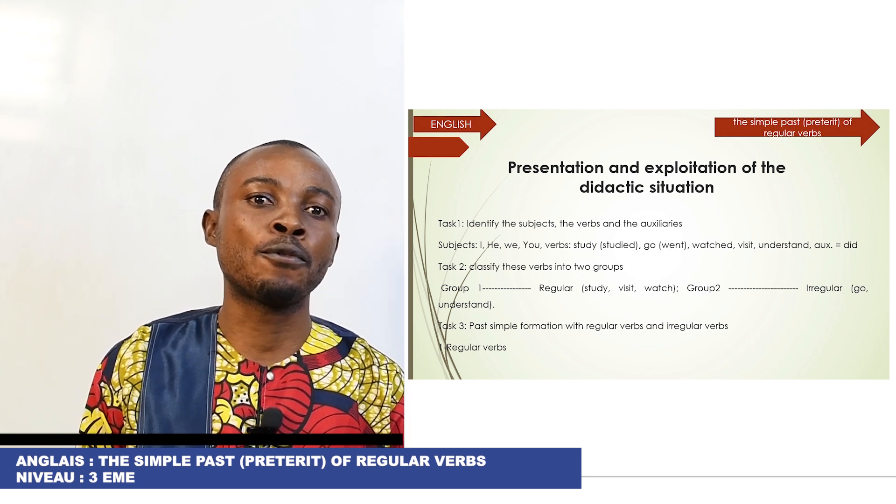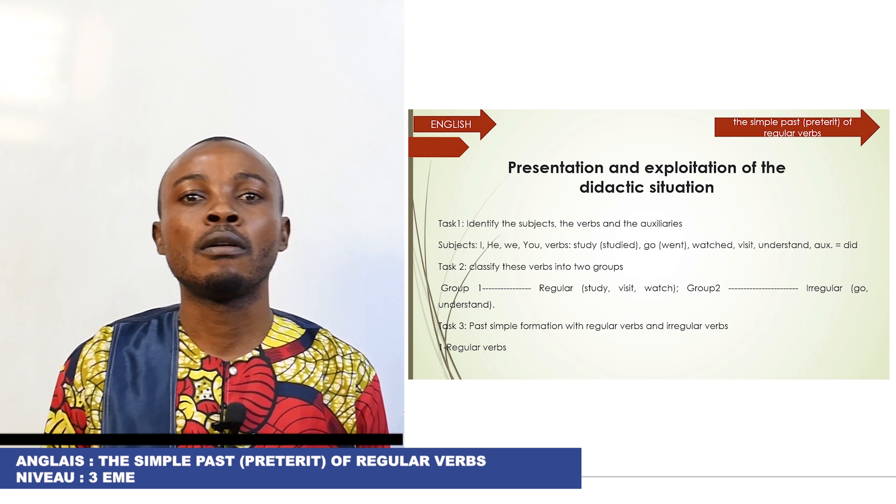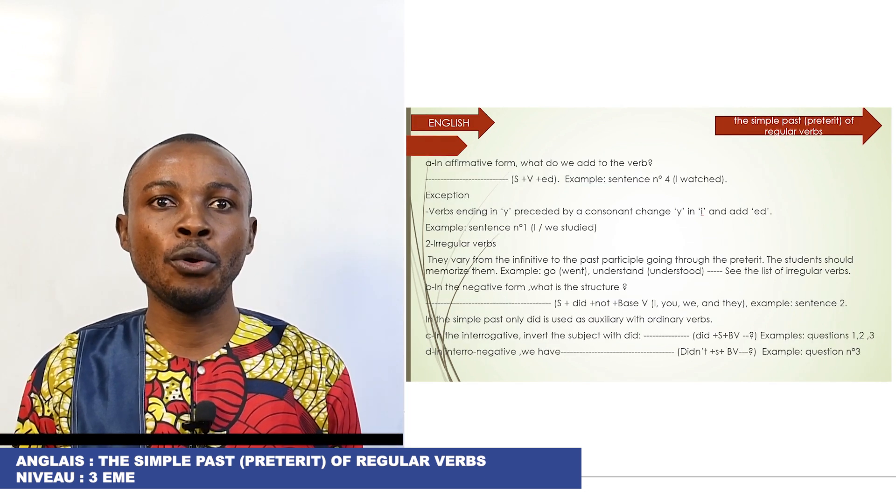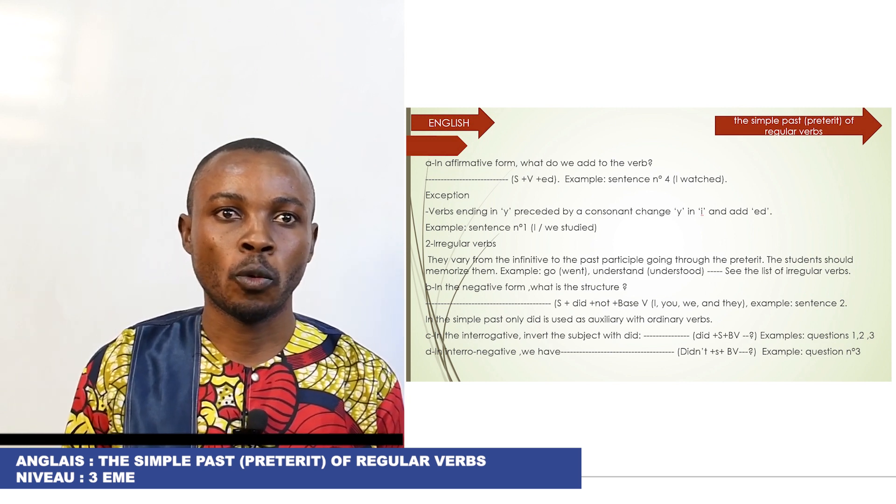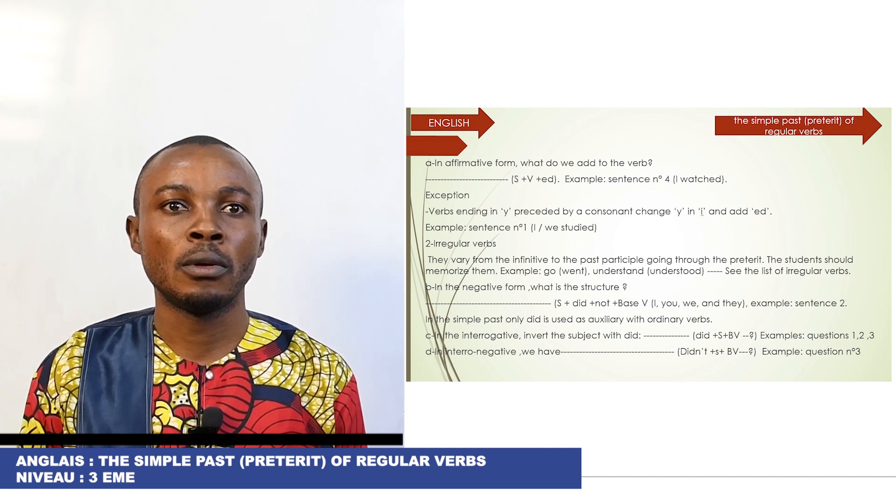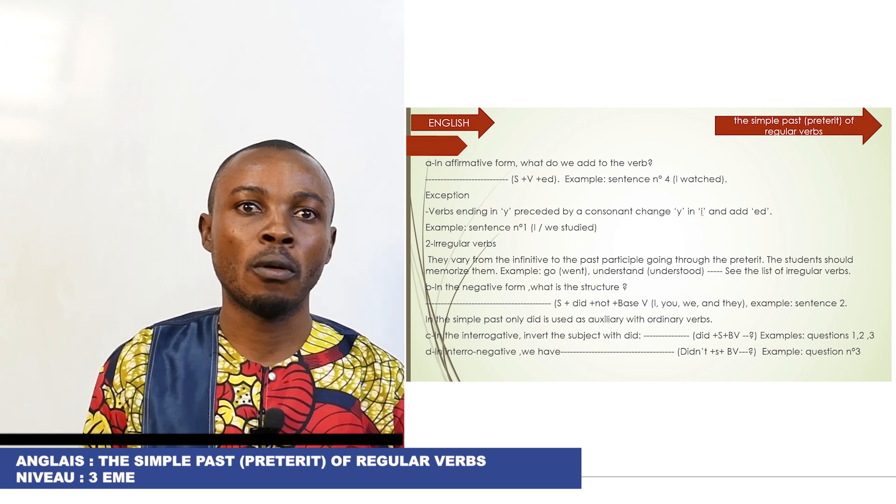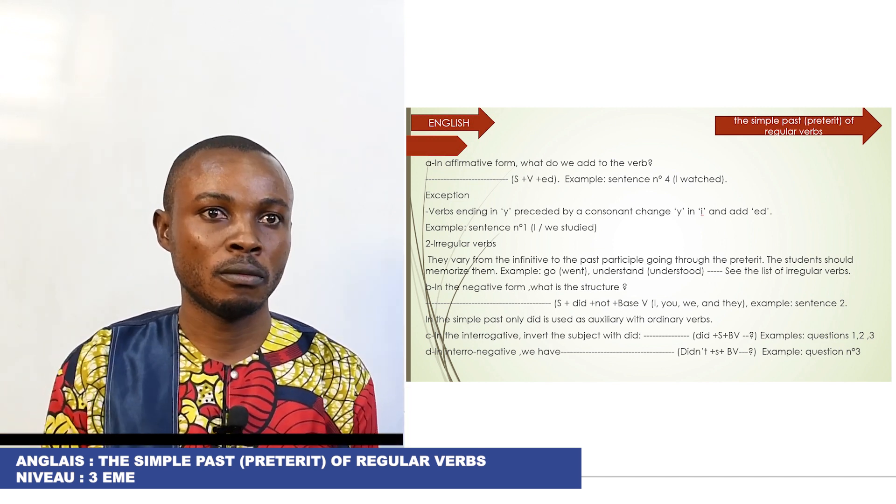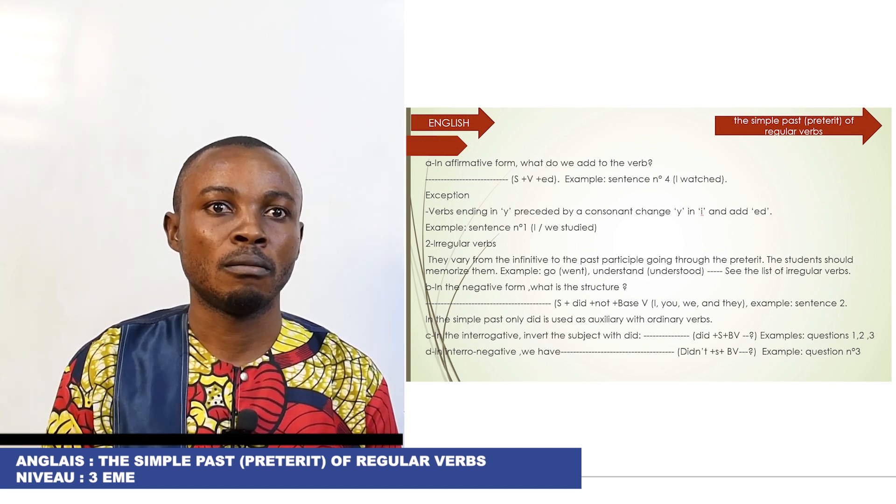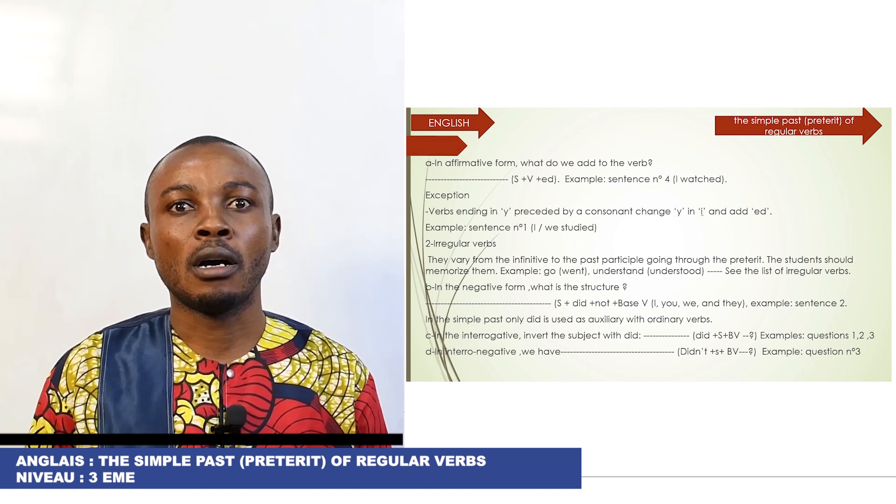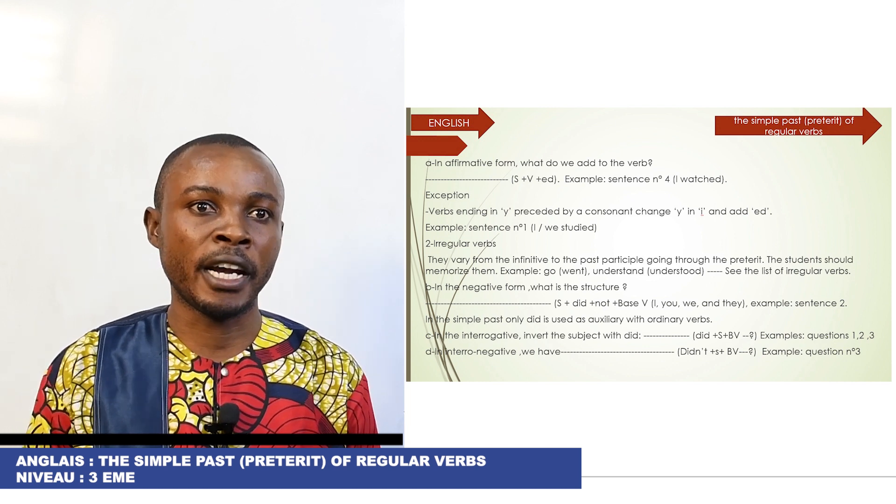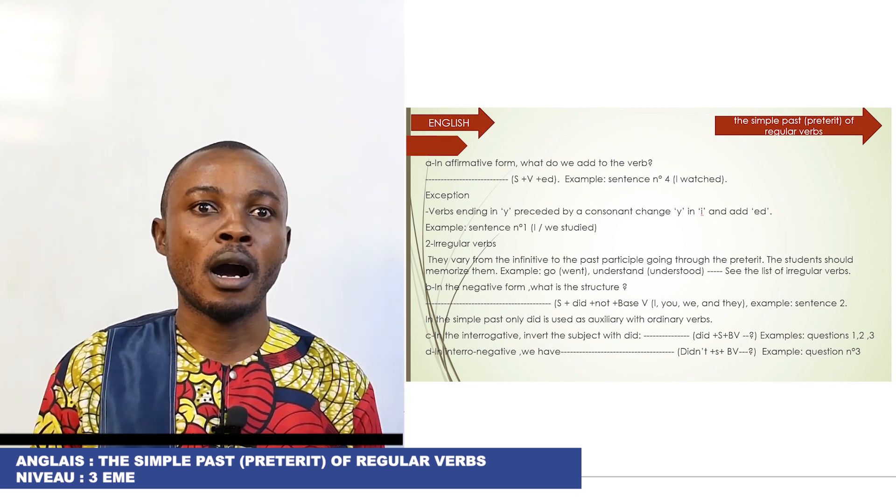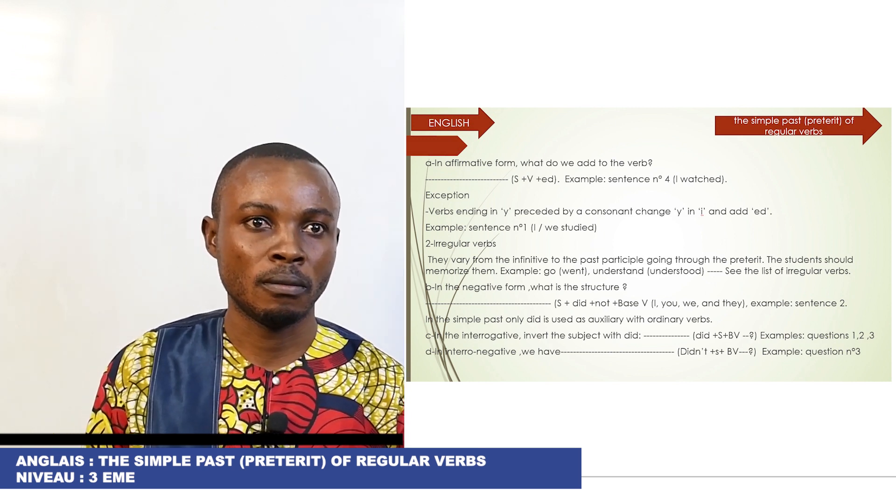Task 3: Simple past formation with regular verbs and irregular verbs. Regular verbs: In affirmative form, what do you add to the verb? We have normally subject plus verb plus -ed. Example, we can find it in sentence number 4. We have some exceptions as verbs ending in y preceded by a consonant change y to i and add -ed. You can find it in sentence number 1, where we have 'we studied.'